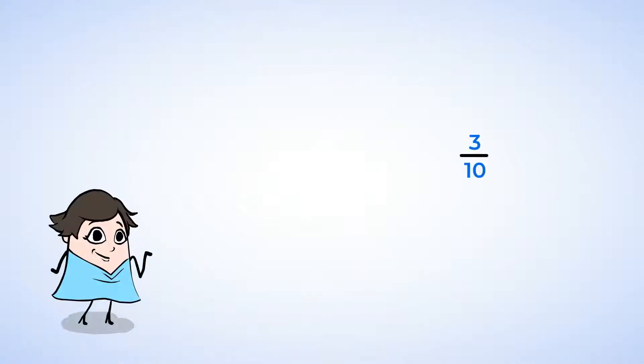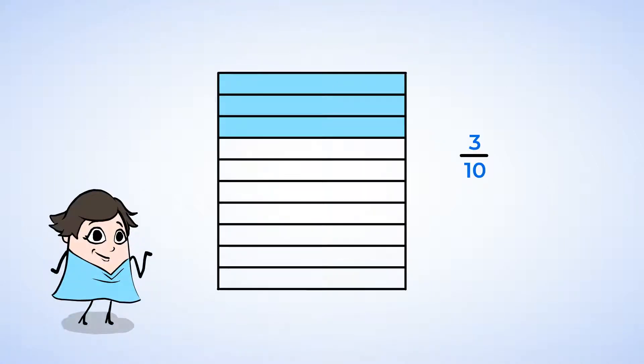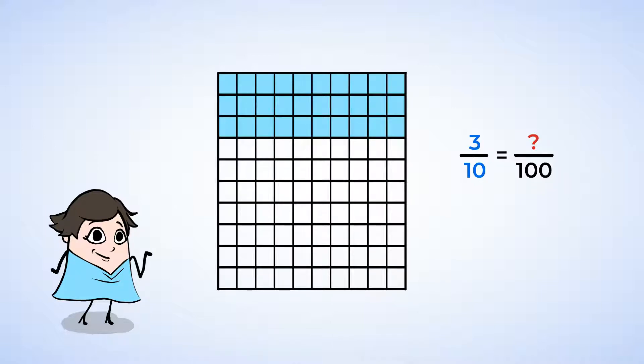Here we have the fraction 3 tenths and rectangles that represent it. What if we wanted to convert the fraction to hundredths? Well, there are 10 tens in 100. We can split each of these rectangles into 10 parts and that would give us 100 parts. And what has happened to our shaded part? There were 3 shaded parts, but now there are 30 shaded parts.